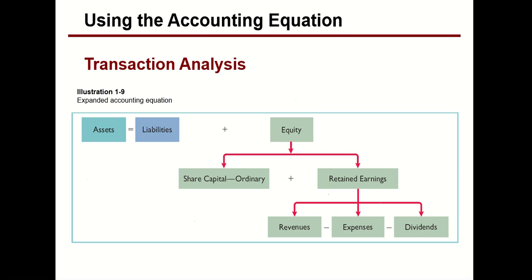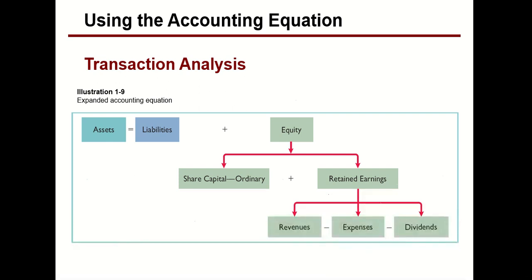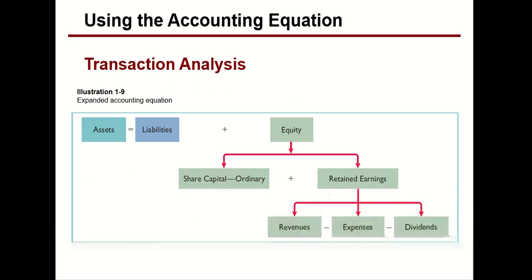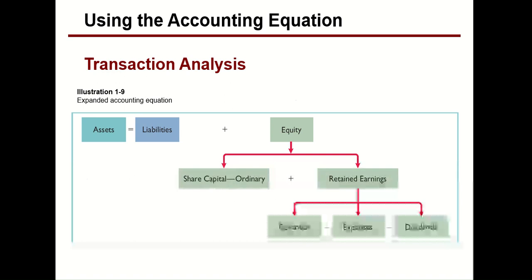This is the extended form of the accounting equation. The accounting equation is the same as the balance sheet or statement of financial position. The whole accounting cycle ends on the statement of financial position, which is: Assets equals Liabilities plus Owner's Equity. Here, owner's equity has been subdivided into two parts — first is share capital, and the second is retained earnings.